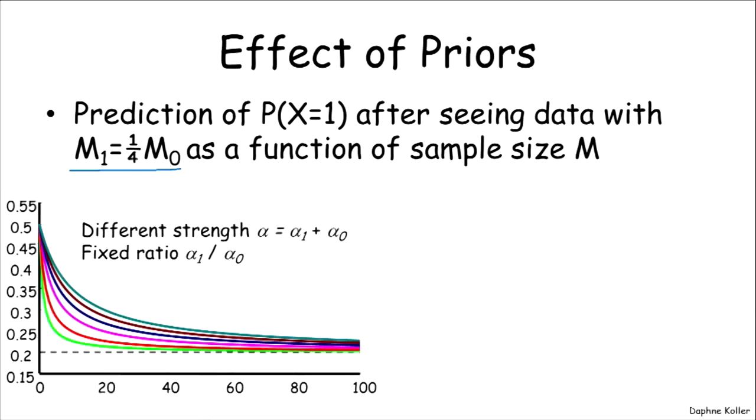So here we're playing around with a different strength, our equivalent sample size. But we're fixing the ratio of alpha one to alpha zero to represent, in this case, the 50 percent level. So our prior is a uniform prior, but of greater and greater or changing strength.